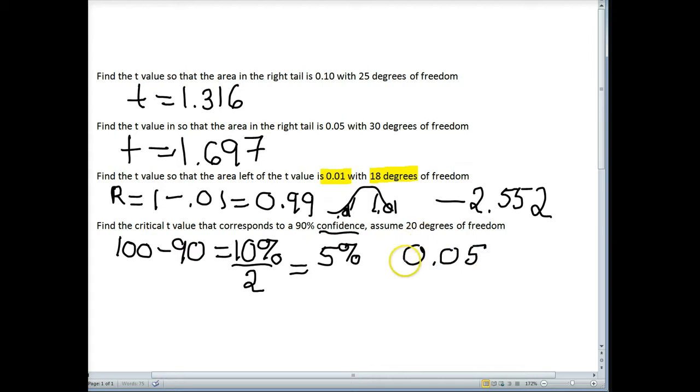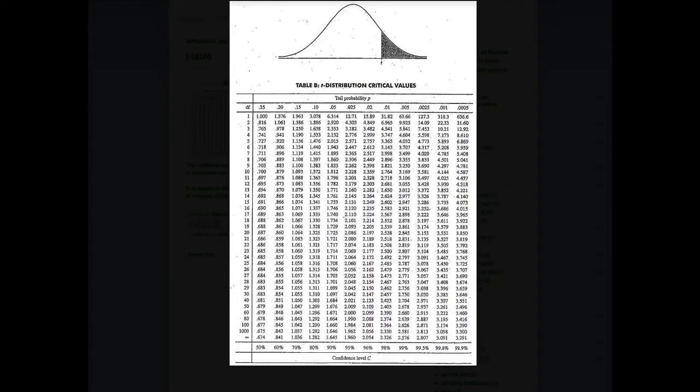I'm looking at the 0.05 and I want to find the 20 degrees of freedom. So I had to do a little bit of work with this confidence because I had to first get my level of unconfidence and divide that by 2 to indicate two tails. And then I can look at 0.05 and 18 degrees of freedom.